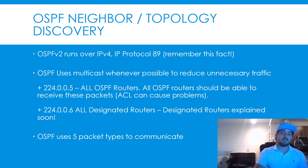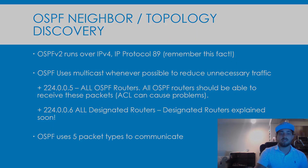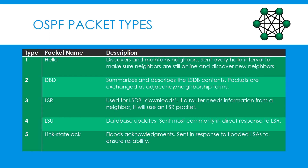OSPF uses five different packet types to communicate, share updates, and form neighborships. OSPF routers move through different phases or states before becoming fully adjacent with each other. By fully adjacent, I mean that all routers have an identical copy of the link state database. The neighbor states and adjacency requirements are covered in more detail in the next video.